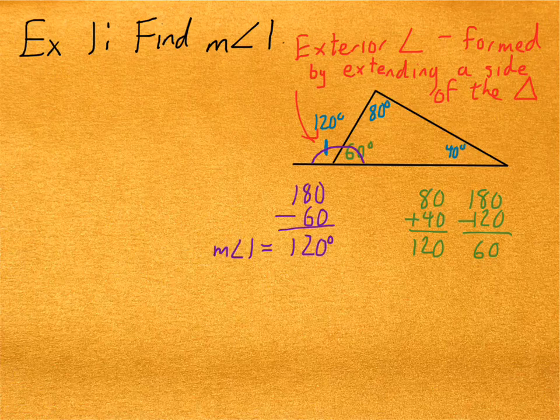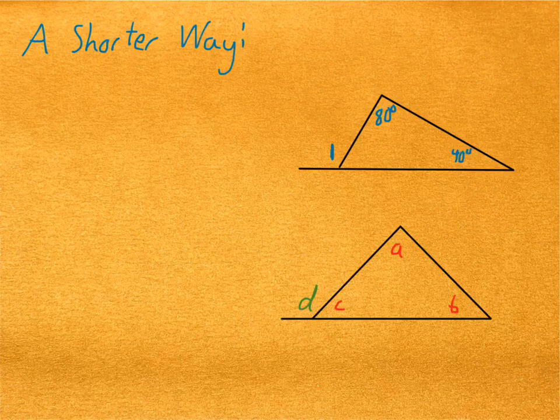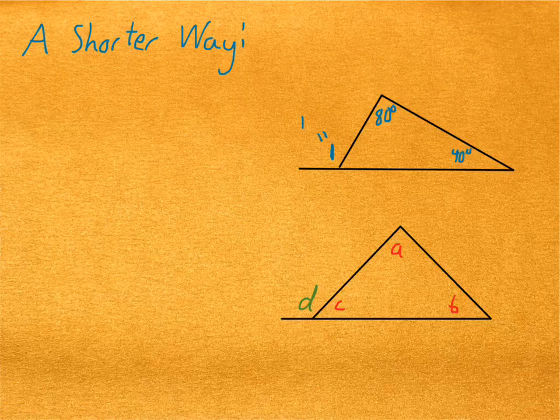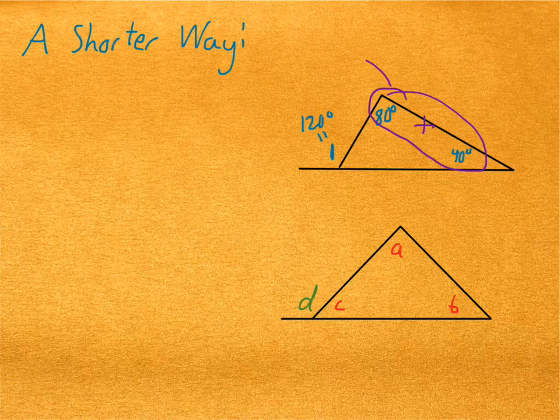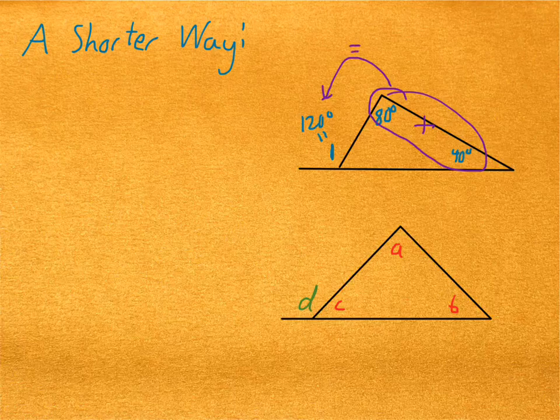That wasn't too bad. But wait a sec. Isn't there a shorter way to do this? We just said that the measure of angle one is 120 degrees. How does that relate to the 80 and the 40? What's the relationship? Well, you probably noticed that if you add the 80 and the 40, that would give you the 120. I wonder if this always works.